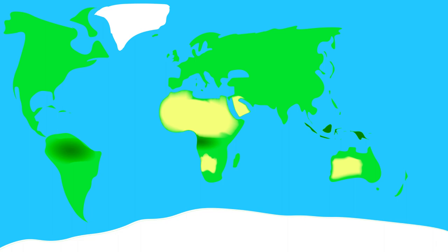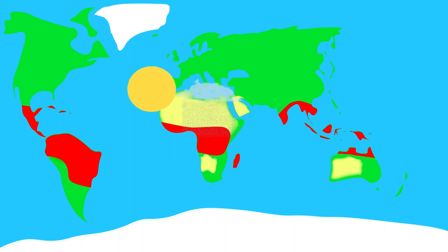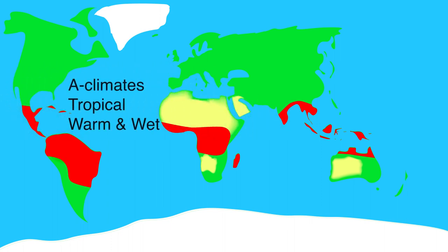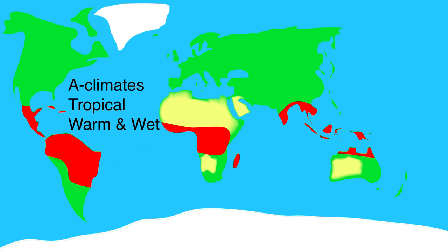He started at the equator. Here the sun is at a high angle and is therefore high in the sky, making it very warm around the equator. There is often a low pressure area around the equator, and because of that it often rains. At and near the equator we find climates that are warm and wet. Köppen gave these climates the letter A. These are climates where the average temperature per month never gets lower than 18 degrees and there is significant precipitation. Another name for these climates is tropical climates.